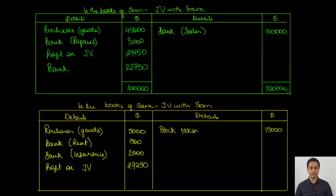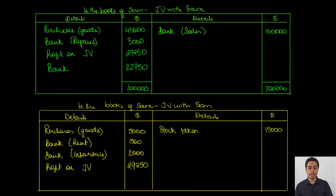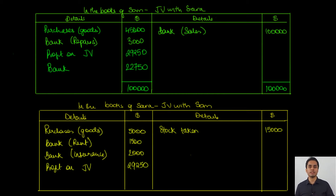Similarly, in the books of SARA, the debit side totals $37,750 and the credit side totals $15,000, giving a debit balance of $22,750 — exactly the same as the balance in SOM's books. This amount is receivable by SARA, and the balances in both accounts must always match because a remittance by one co-venturer will be the collection by the other. So SARA will receive $22,750 from SOM, and the credit side of SARA's JV account is closed by receiving this amount.